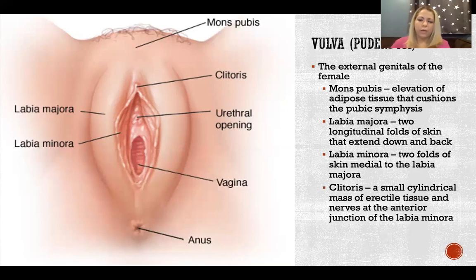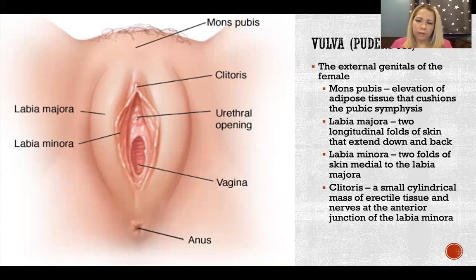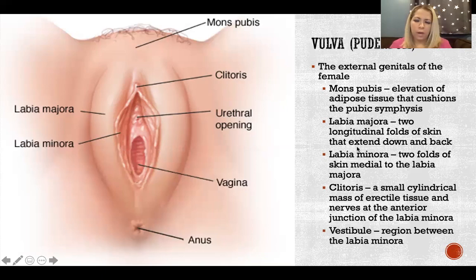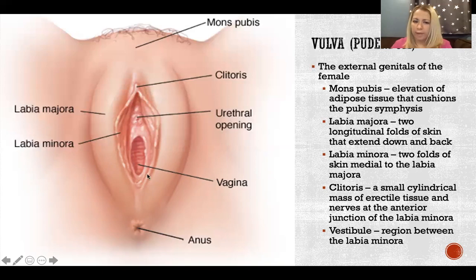And the clitoris — we'll talk more about it in the next slide, but it's a small cylindrical mass of erectile tissue and nerves at the anterior junction of the labia minora. In this picture, this small structure here would be the clitoris, and we'll talk about that again in a minute. The vestibule is the region between the labia minora — that whole region here and everything it contains, which we'll discuss in more detail.